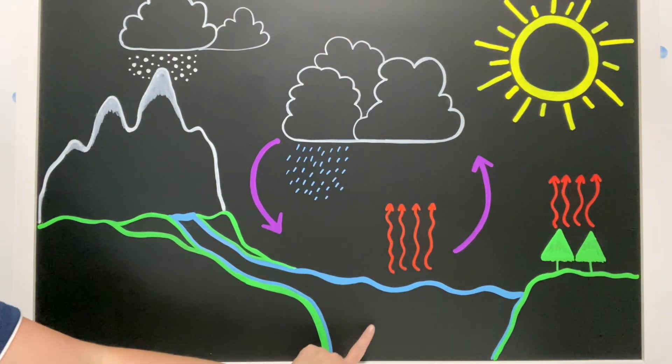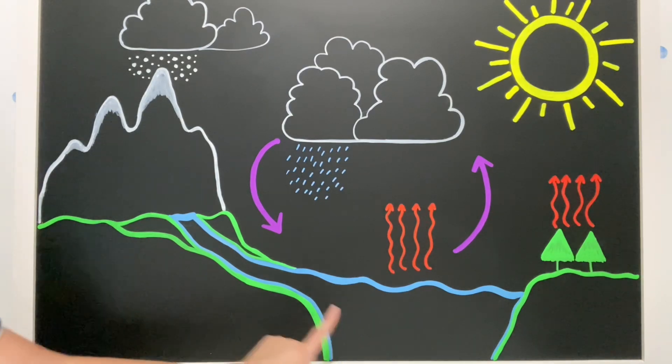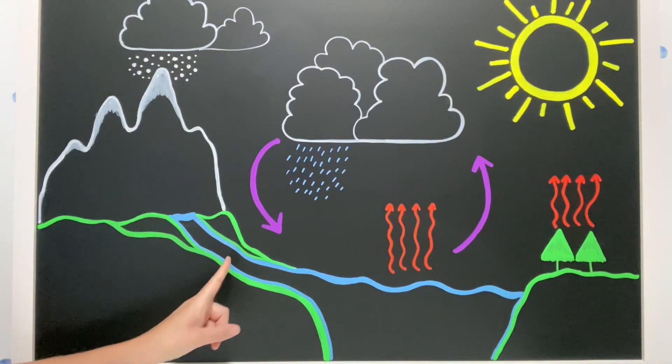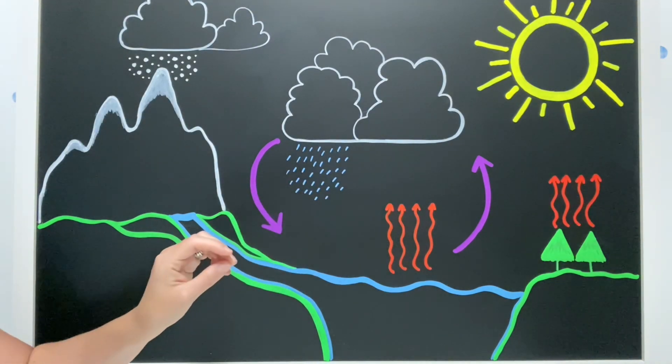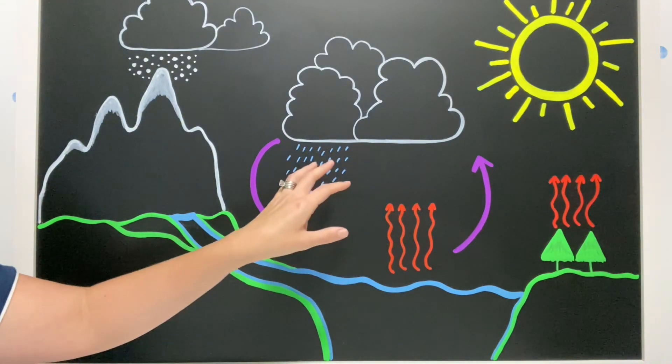First, you have water in your oceans and your lakes and the rivers. Remember when the sun heats up water, that water can become a gas if it heats up enough, and that's called our water vapor.